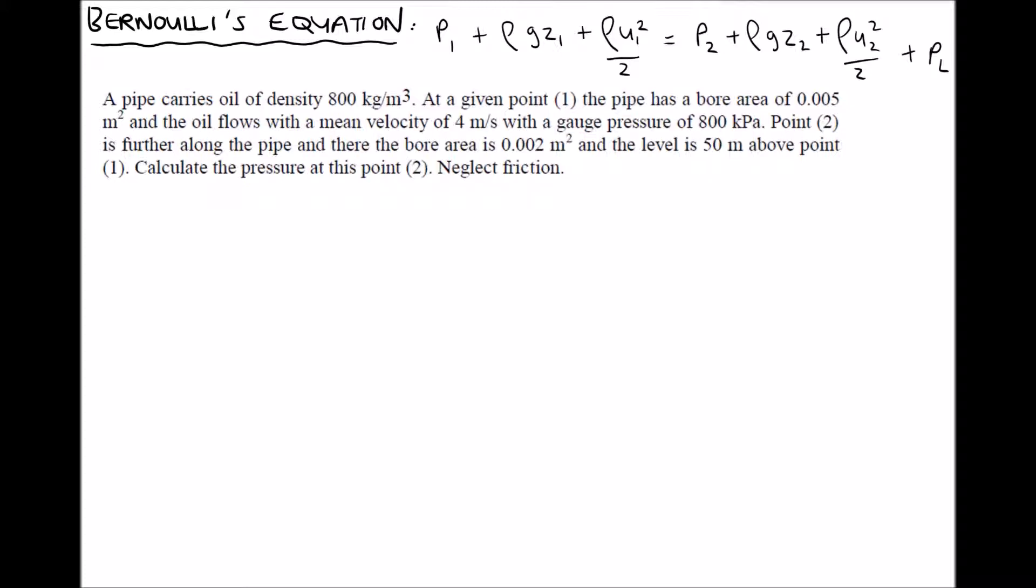It begins by saying a pipe carries oil of density 800 kilograms per meter cubed. So we have the density of our fluid, rho, as 800 kilograms per meter cubed. It goes on to say the pipe has a bore area, this time it gives the area rather than the diameter, of 0.005 meters squared, and the oil flows with a mean velocity of 4 meters per second. So it's given us some information there about the area and also the velocity.